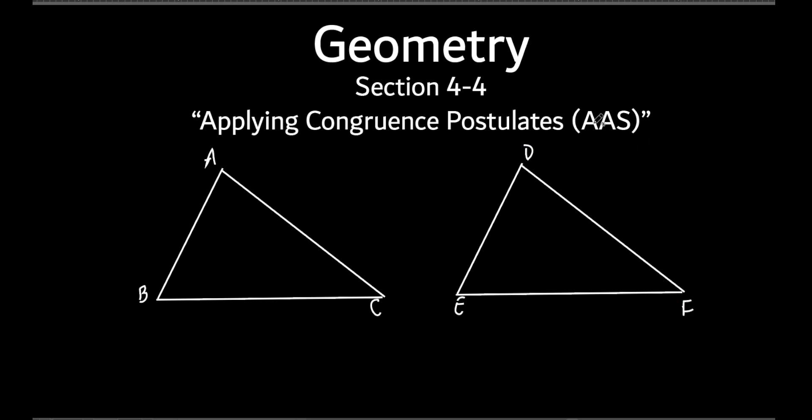You could probably teach this yourself, right? So, this one is the angle, angle, side postulate. Which one do you want to make equal? A and D. And does it matter which angle? Let's just do B and E. Now, if this is angle, angle, side, which side am I not going to pick?